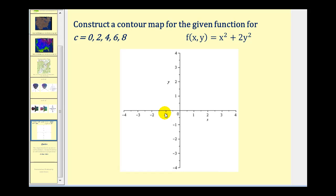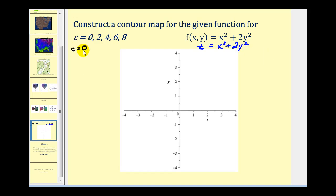Let's create a contour map for the function f of x, y equals x squared plus two y squared. We're given c equal to zero, two, four, six, and eight. It's usually important to pick values of c where the difference is consistent — here we're increasing c by two each time, so we'll have five different level curves. These values of c represent the values we replace z with, so it's really z equals x squared plus two y squared. When c equals zero, we have zero equals x squared plus two y squared. The only solution is x equals zero and y equals zero, so it's just a point at the origin.